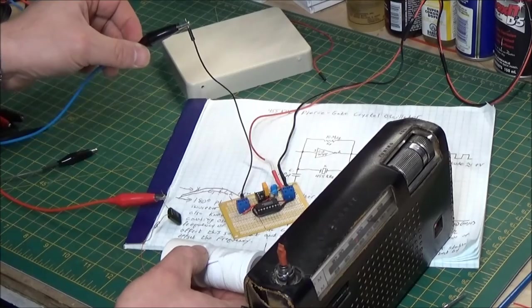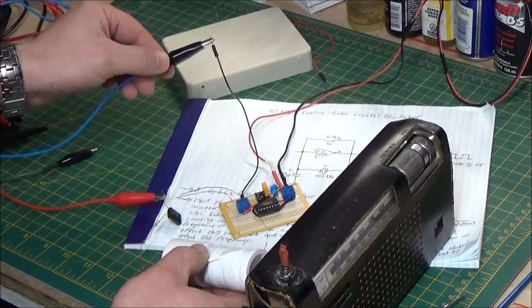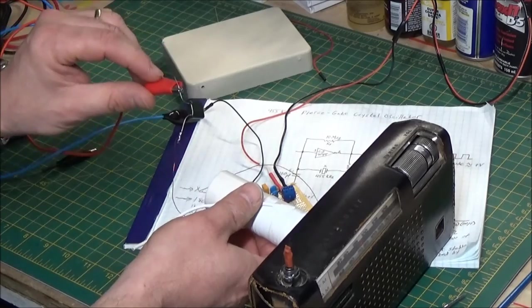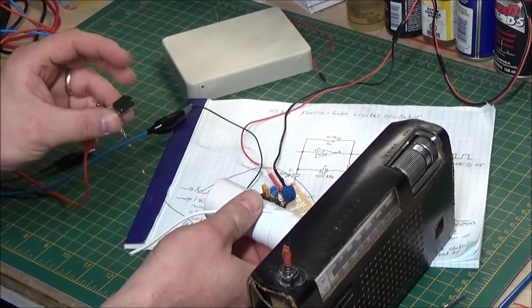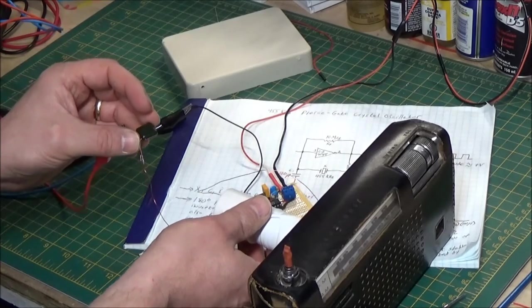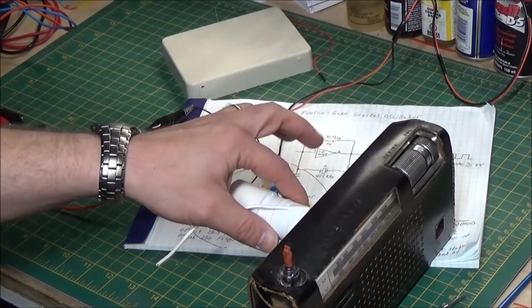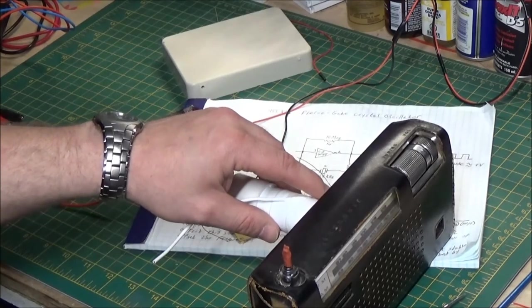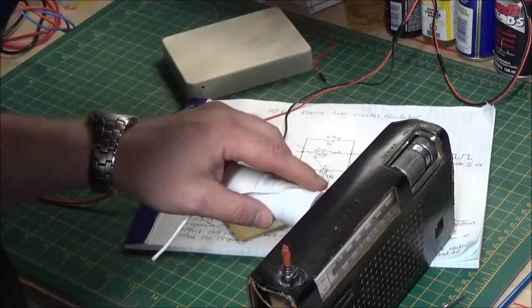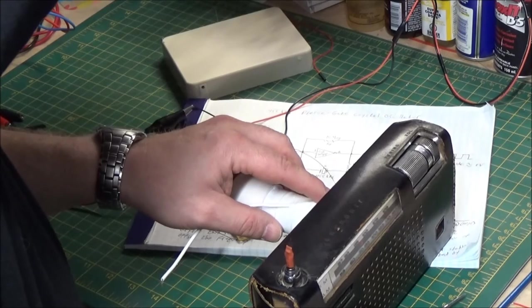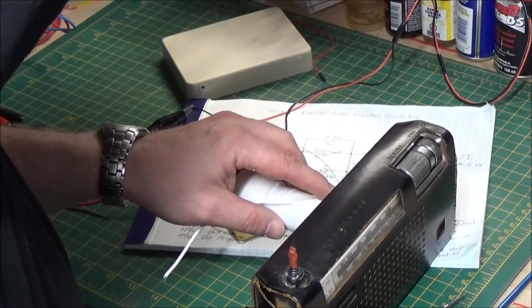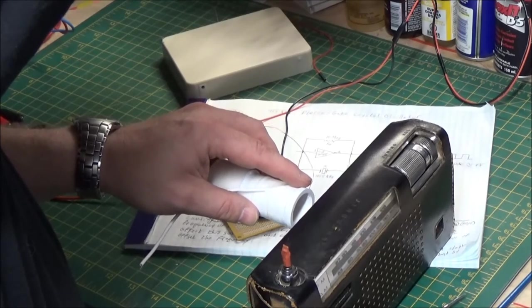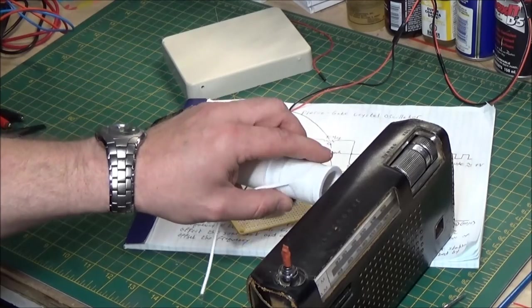I'm connecting the negative lead of my signal generator or audio generator or MP3 player to the ground. I'm just tying it to ground. The signal end, I'm tying through this little cap to this coil. Just gives me a little bit of isolation. This is a 0.47 microfarad or 0.047 or something like that. It doesn't really matter. You have pretty much a directional signal generator. You can couple it up to your antenna. You can adjust the voltage to your power supply. Just by adjusting the voltage, you can adjust how it works.